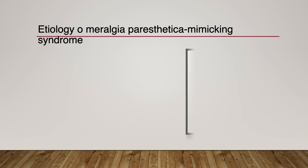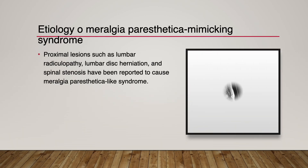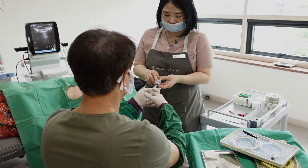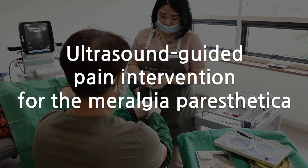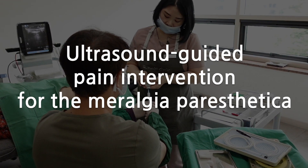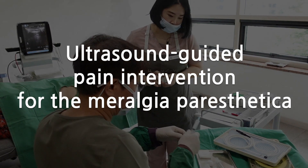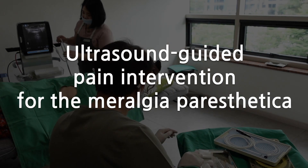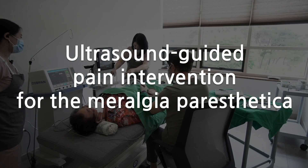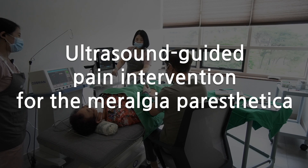Proximal lumbar spinal lesions refer to anterior thigh pain and have been reported to cause a Meralgia Paresthetica-like syndrome. Today, I'll talk about clinical clues in diagnosing Meralgia Paresthetica, anatomy of the lateral femoral cutaneous nerve, and ultrasound-guided pain intervention for Meralgia Paresthetica.